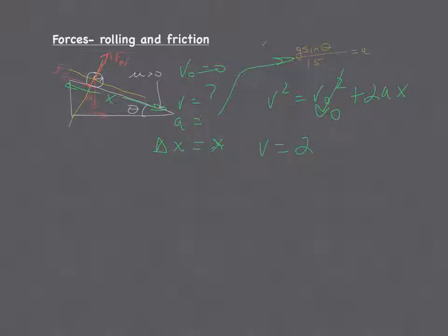Now plugging in the A here, g sine theta times x all over the 1.5. And that's supposed to be v squared, so we would square root everything. So that would be our final answer for the velocity. Now, there's a way to do that without going through the whole force problem and figuring out what the acceleration is.